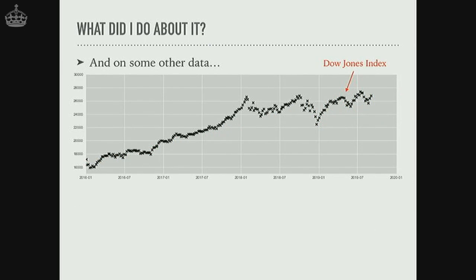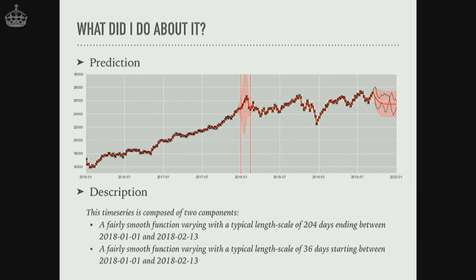Let's try this on the Dow Jones index for the past couple of years. Around 2018 there seems to be some kind of regime change — can this spot that? Running it, we see it picks out this regime change at the start of 2018 over a month or two period. Before that period we have a more slowly varying time series behavior evolving over about 204 days, moving to a more volatile regime after that with a length scale of more like 36 days. Very neat.